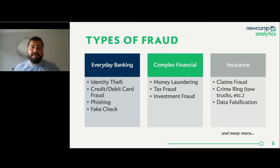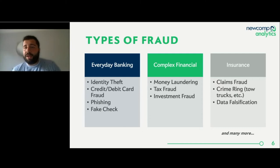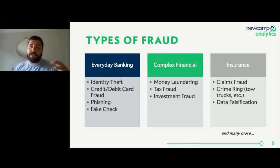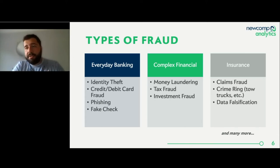It doesn't have to be limited to numerical transactions or geolocation — it can extend into images, where we use pixel data to determine whether a signature has the right curve in the expected spot. And then we have some of the more complex financial problems: money laundering, tax fraud, investment fraud. When we talk about everyday banking, these are simple algorithms that consider customer information, transaction information, and transactions from customers within the same segment.